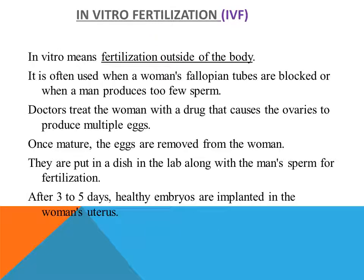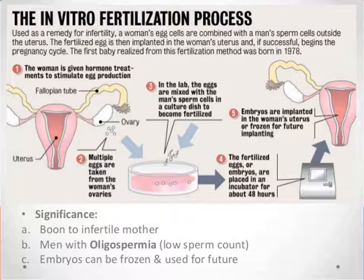In vitro fertilization is known as the test tube baby program. In this method, ova from the wife or a donor and sperms from the husband or a donor are collected and induced to form a zygote under stimulated conditions in the laboratory. This is followed by embryo transfer, which can be of two types: zygote intrafallopian transfer (ZIFT) and intrauterine transfer (IUT).